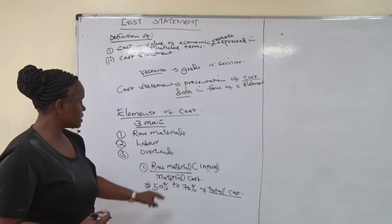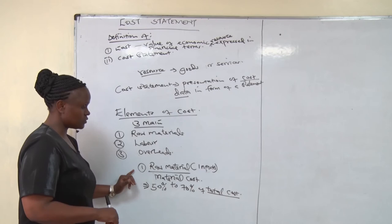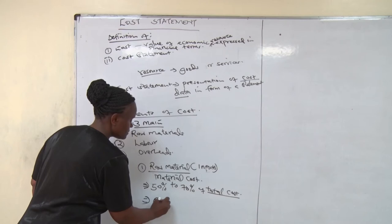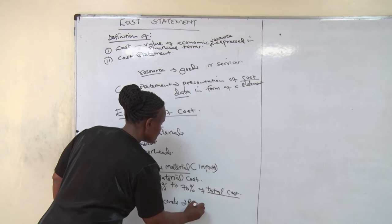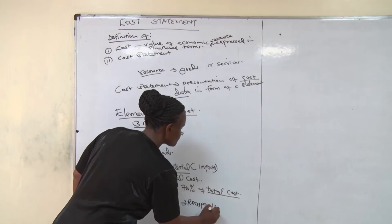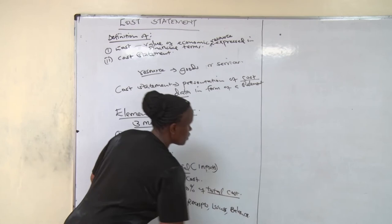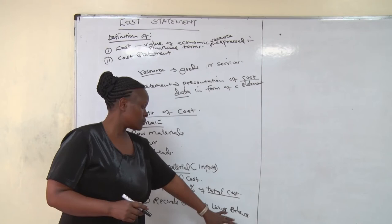To control the raw materials, you must have a system. In most cases, in the production department, they have a stores department whereby they record the raw materials. They record when they receive — which we call receipts. When they issue the materials, they record — which we call issues. Then they get the balance. You must make sure you record the receipts, the issues, and the balance.